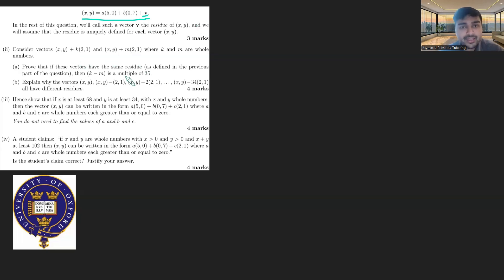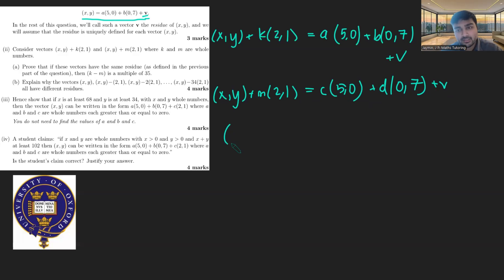Well, this is actually quite straightforward to do. If they have the same residue, then that means that the first vector (x,y) plus k times (2,1) can be written in the form a times (5,0) plus b times (0,7) plus some vector v. And then this other vector (x,y) plus m times (2,1) is equal to c times (5,0) plus d times (0,7) plus v. And so therefore, if I just subtract both equations from one another, the x,y's will cancel. I'll get (k minus m) times (2,1) equals, and then a minus c is just some other constant, integer e, times (5,0). B minus d, again, is going to be some integer f times (0,7), and then v's will cancel out.